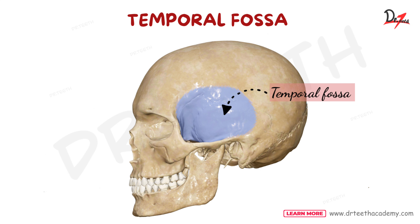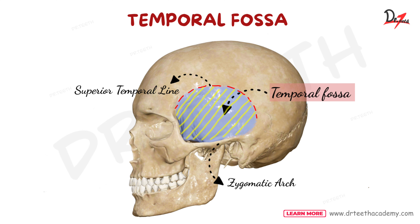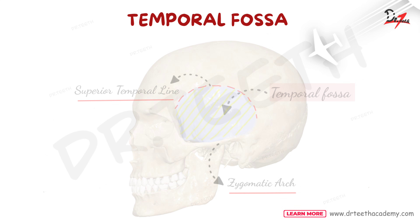Now focus on this diagram. Here we have this line that is the superior temporal line, and here we have the zygomatic arch. So this area is called the temporal fossa — it is present between the superior temporal line and the zygomatic arch.